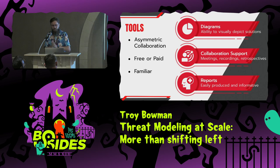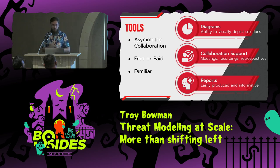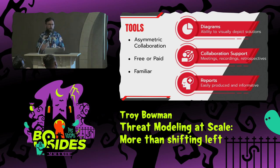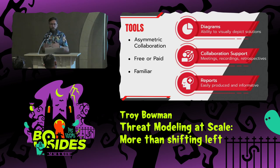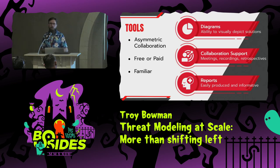Next: tools. It's hard to find tools specific to threat modeling, but they exist — paid and free versions. One of the most important aspects is asymmetric collaboration. The tools need to allow you to perform work outside of set time windows with the project teams, and vice versa — letting project teams do things outside a meeting with you, then allowing you to go back in and see what was done, what changes were made, what progress was made. That asymmetric collaboration in the tools is extremely important.